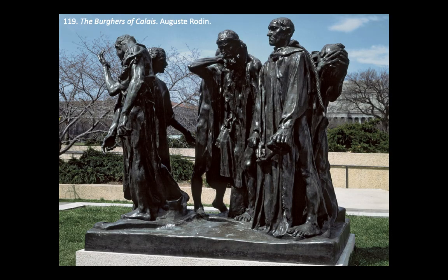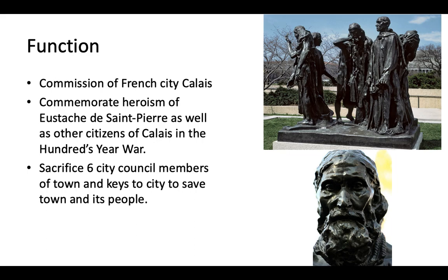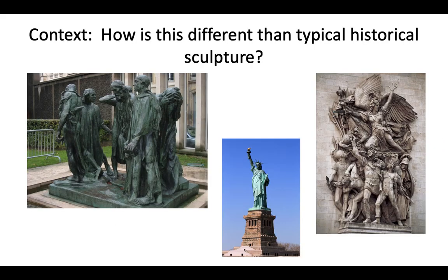That leads us to the Burghers of Calais, the image in our 250. When looking at this piece, it was commissioned by the French city of Calais in commemoration of citizens who sacrificed themselves during the Hundred Years' War against the English — an event that happened several hundred years before the commission. So this is a recounting of a very important historic moment. The story is of how six city council members sacrificed themselves and gave themselves up, rather than surrender the keys to the city or sacrifice the citizens to the English.